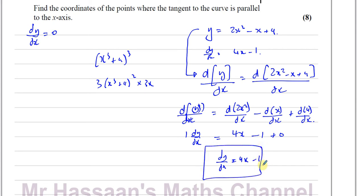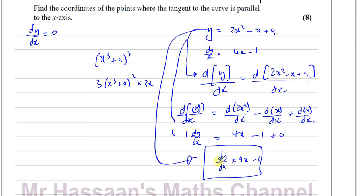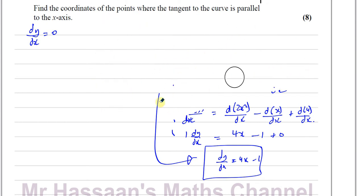Explaining that in P1 would be a bit pointless, but that's actually what we're doing when we differentiate — differentiating every single term with respect to x. When we differentiate y with respect to x, we get dy/dx; when we differentiate 2x squared we get 4x; minus x gives minus 1; and the constant 4 gives 0. These steps we don't write down — we go straight to the answer, and that's fine. But this gives you an understanding of what implicit differentiation is all about.